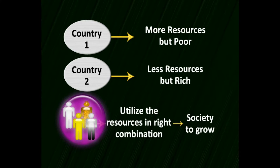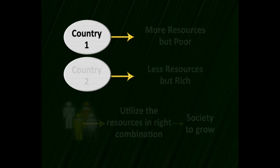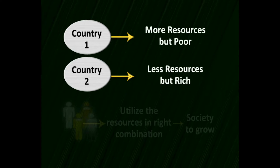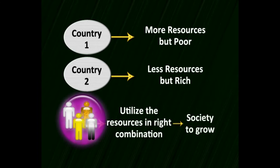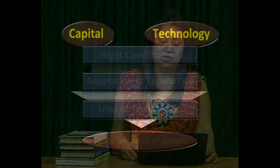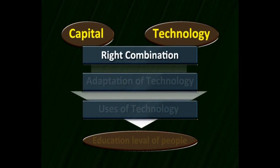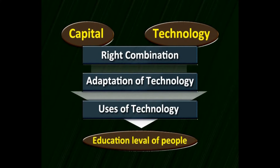Resources are important for the growth of any economy, but countries with many resources can be poor while countries without resources can be rich. It is the people who genuinely utilize resources in the right combination that make a society grow. Economic growth is directly related to the proportional knowledge and talent available in an economy. Natural resources are of no use without proper utilization. The right combination of capital and technology and the adoption of technology depends on the educational level of the people — we need skilled people to design economic growth.